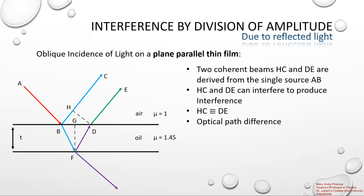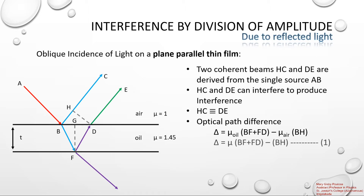The optical path difference from rays generating from a single source A will be the additional path traveled. That is, the optical path difference equals mu_oil into (BF + FB) minus BH, where the surrounding medium is air. This gives the path difference between the two interfering waves. The actual path difference or true path difference will be the optical path difference along with the path difference due to phase change upon reflection — that is, delta minus lambda by 2.